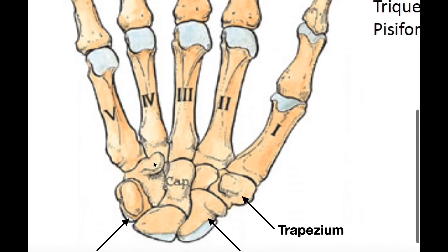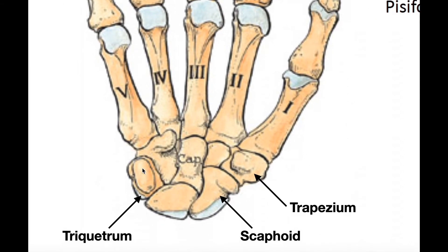This is actually called the hook of hamate, and it has clinical significance because the pisiform and the hook of the hamate stick out palmarly. They provide a canal right here called the canal of Guyon. It actually provides a canal for the ulnar nerve to get from the forearm into the hand. So if we were to follow the ulnar nerve, it goes between the pisiform and the hook of hamate in this canal that it creates.